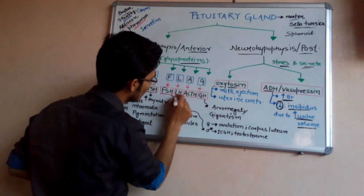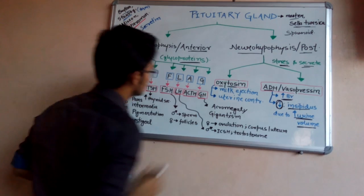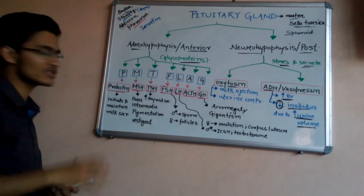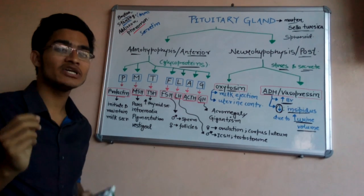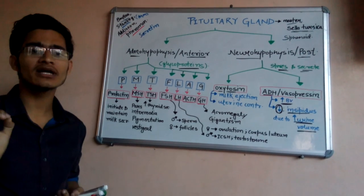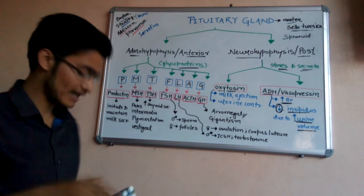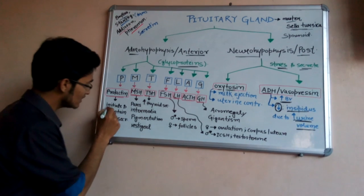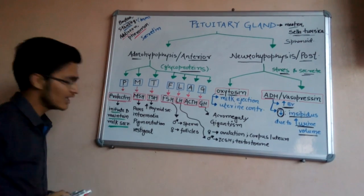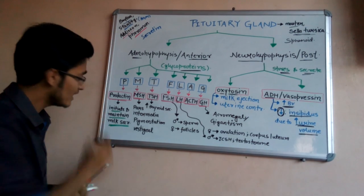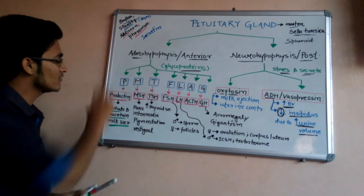The full form of P is prolactin. As the name indicates, 'lactin' relates to lactose, which is present in milk and is formed by the combination of glucose and galactose. So prolactin will increase the initiation and maintenance of milk secretion from the mammary gland of females.